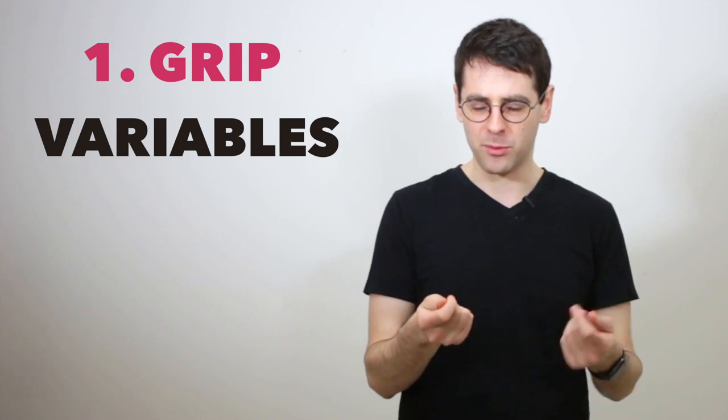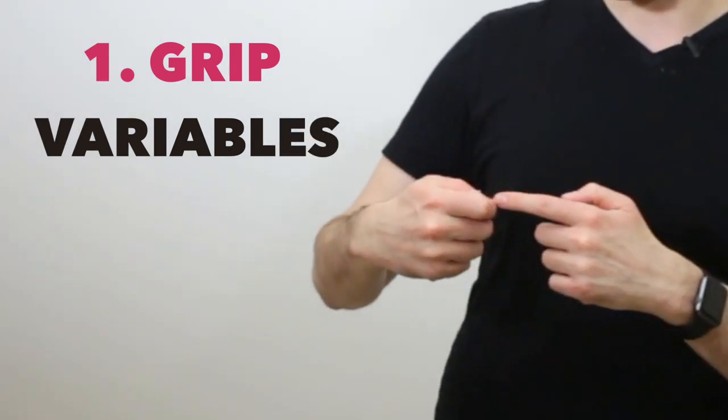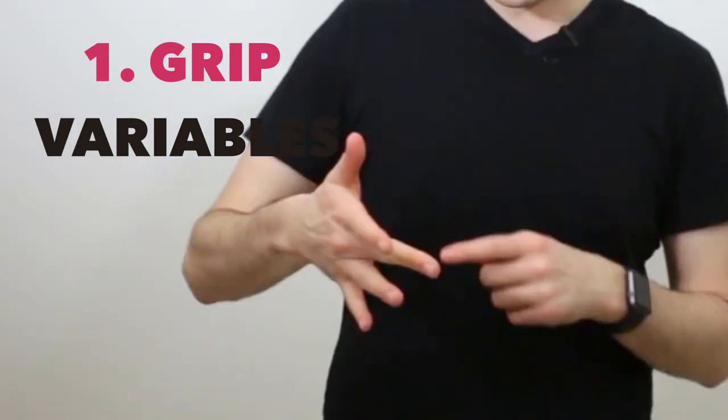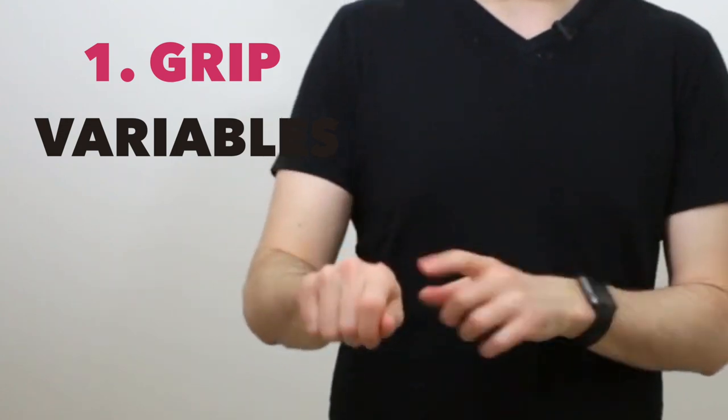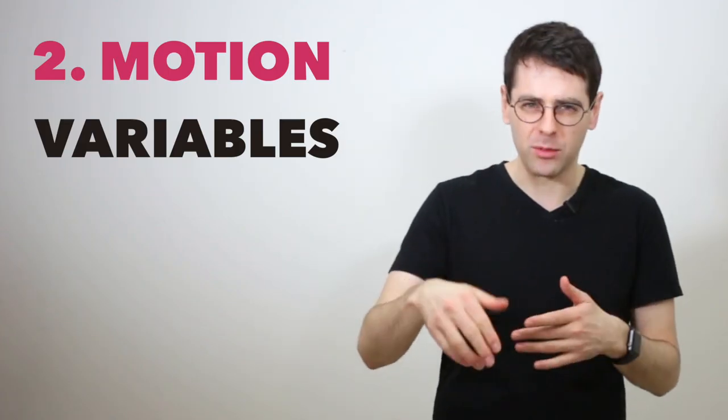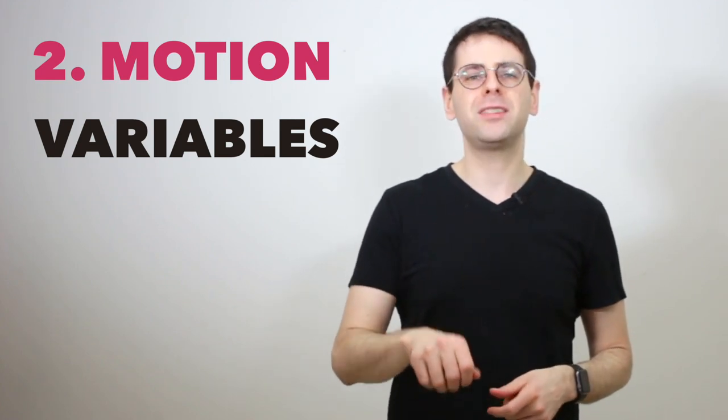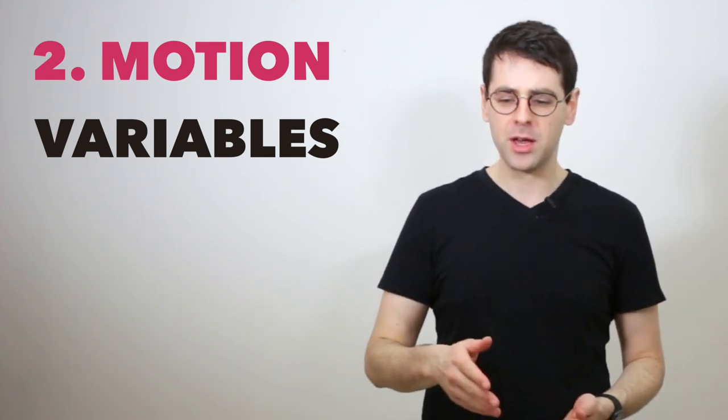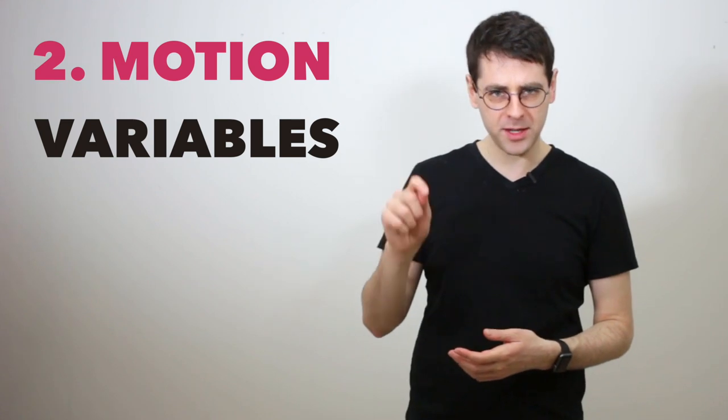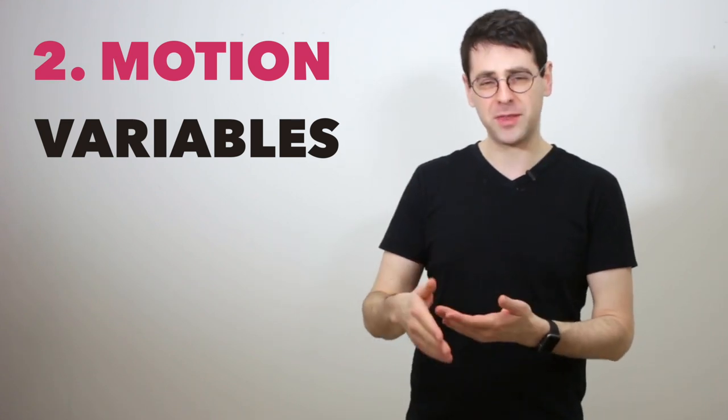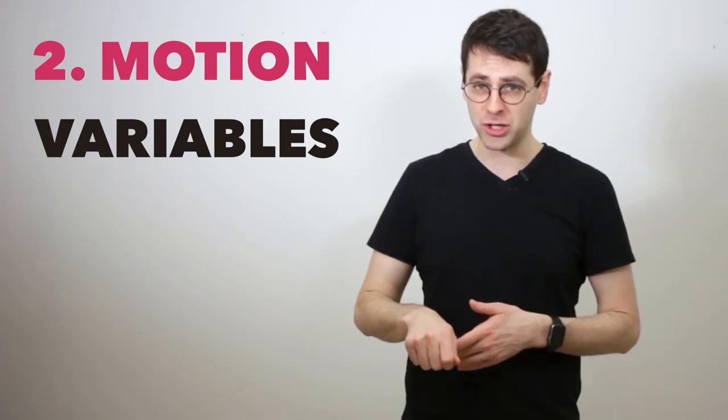Every note has a collection of variable elements that you decide in terms of how that note should sound best. They have certain grip variables, like where exactly does the stick lay on the first finger? How much middle finger are you going to use? Or what angle is the stick making towards your arm? You have motion variables. How fast are you raising the stick before it comes back down? Are you bringing your hand with the stick? Or are you whipping it so that the stick makes a bigger angle than your hand is actually making? How long does the bead of the stick and the head interact before you pull the stick back off?